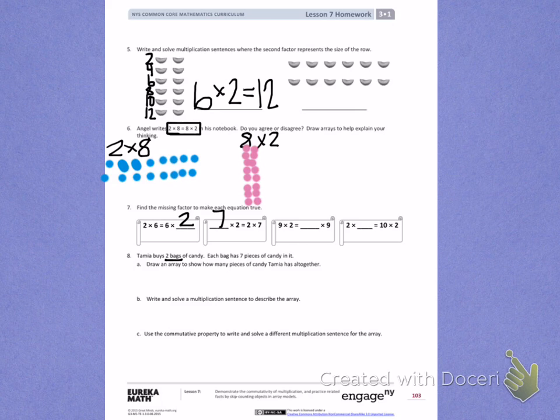I know she has 2 bags with 7 pieces in each bag. So I'm going to draw my first row of 7.